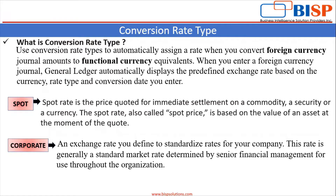What is conversion rate type? Use conversion rate type to automatically assign a rate when you convert foreign currency journal amounts to functional currency equivalents. When you enter a foreign currency journal, general ledger automatically displays the predefined exchange rate based on the currency, rate type, and conversion date you enter. You need to understand what is foreign currency and what is functional currency. Functional currency is the currency that represents the primary economic environment in which an entity operates, and foreign currency refers to all currencies other than the functional currency.